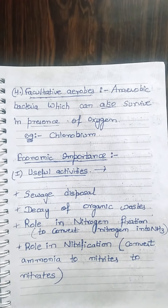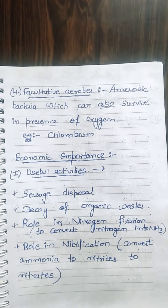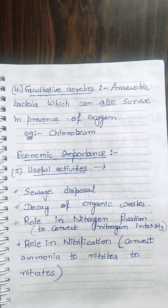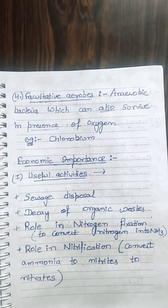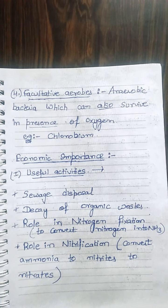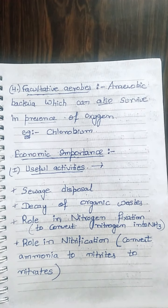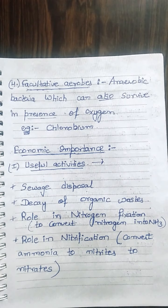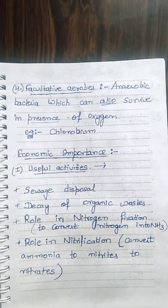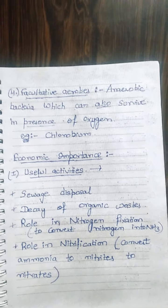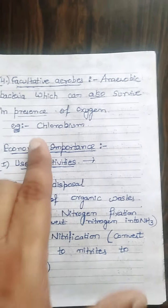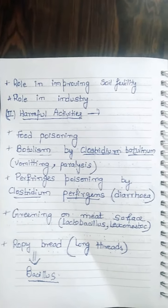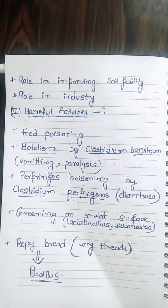Useful activities of bacteria include: disposal or sewage treatment, decay of organic waste, role in nitrogen fixation — which means converting nitrogen into ammonia — role in nitrification — which means converting ammonia to nitrites and nitrates that are absorbed by plants — and role in improving soil fertility.